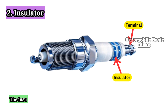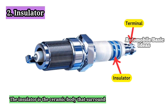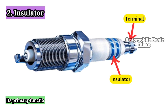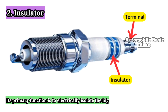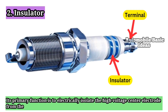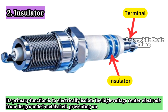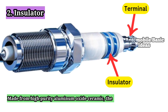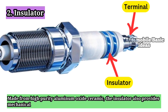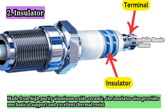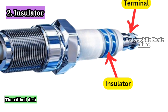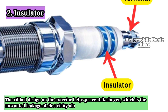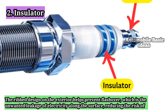2. Insulator. The insulator is the ceramic body that surrounds the center electrode and extends from the terminal to the tip. Its primary function is to electrically isolate the high-voltage center electrode from the grounded metal shell, preventing unintended electrical discharge. Made from high-purity aluminum oxide ceramic, the insulator also provides mechanical support and excellent thermal resistance. The ribbed design on the exterior helps prevent flashover, which is the unwanted leakage of electricity along the surface, reducing the risk of misfires.